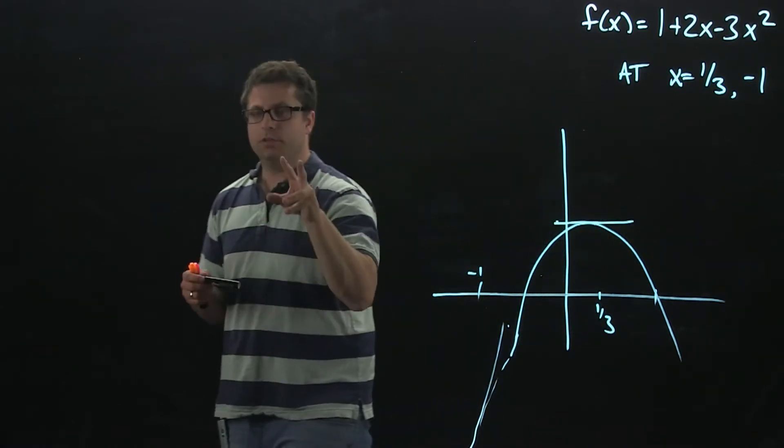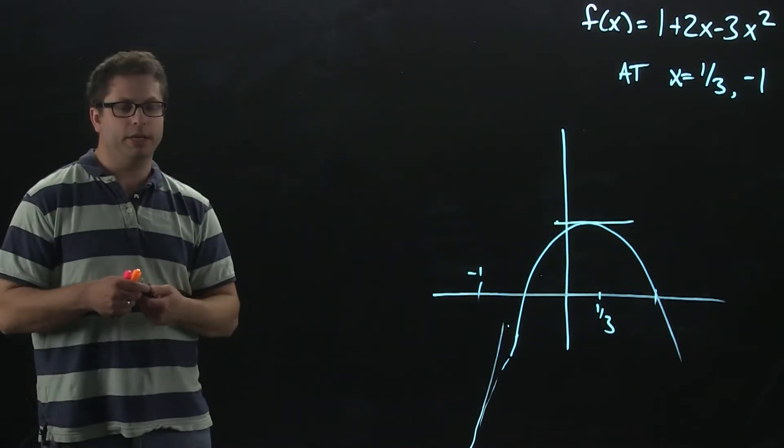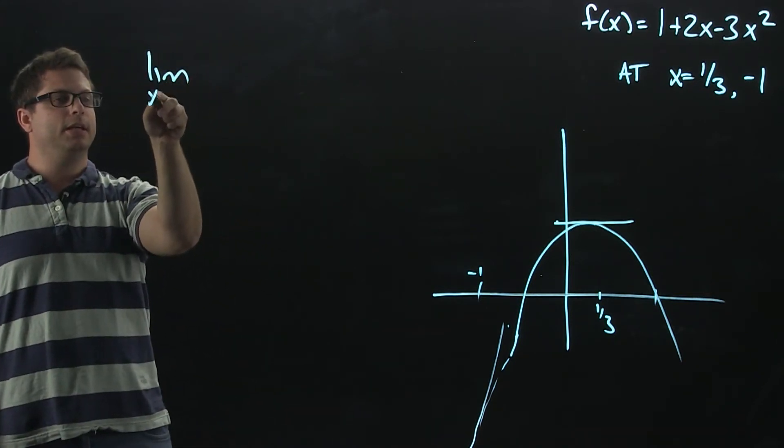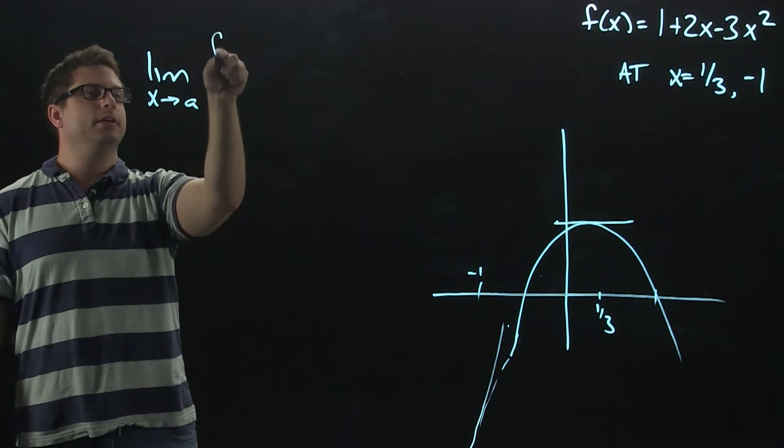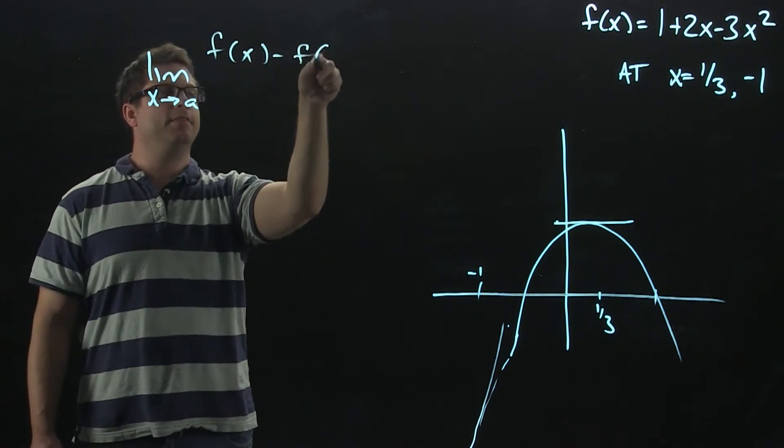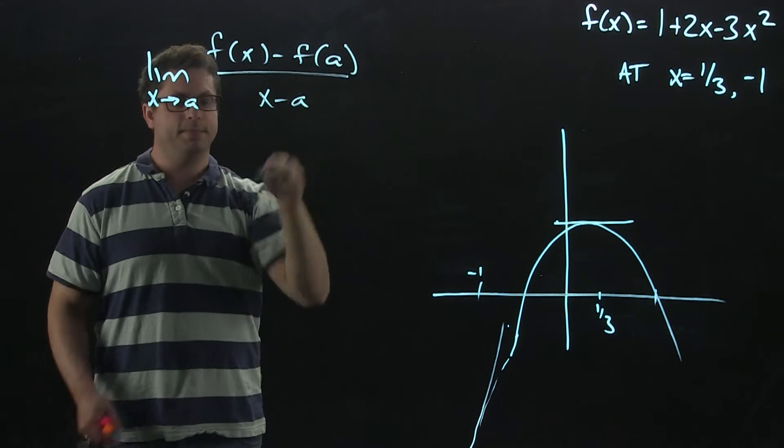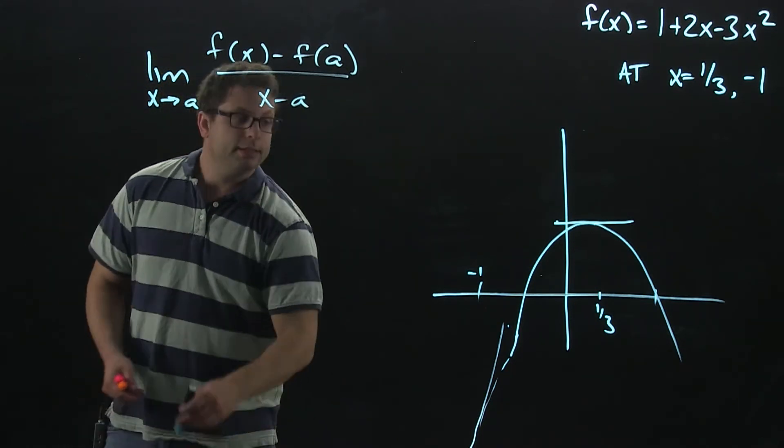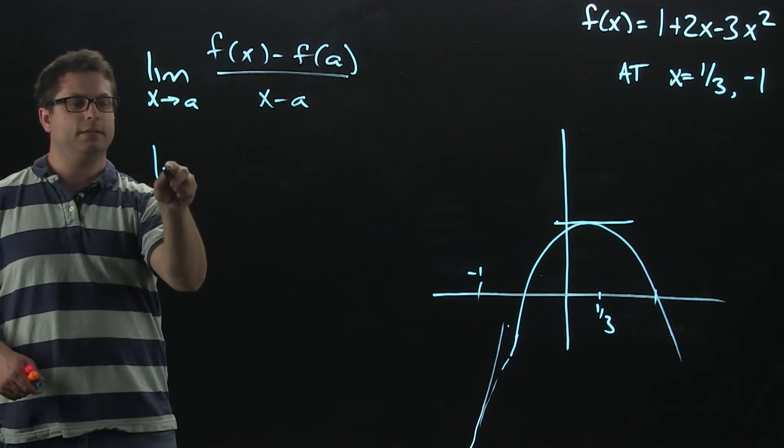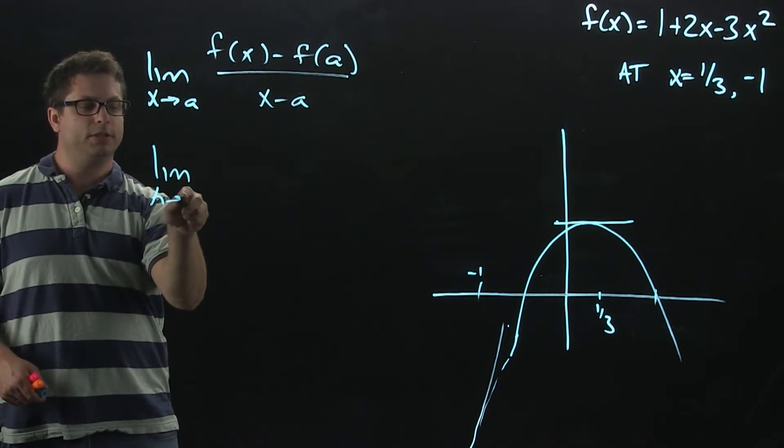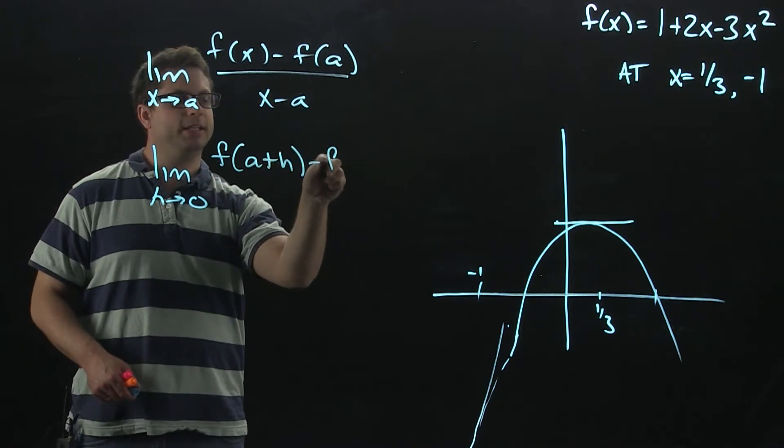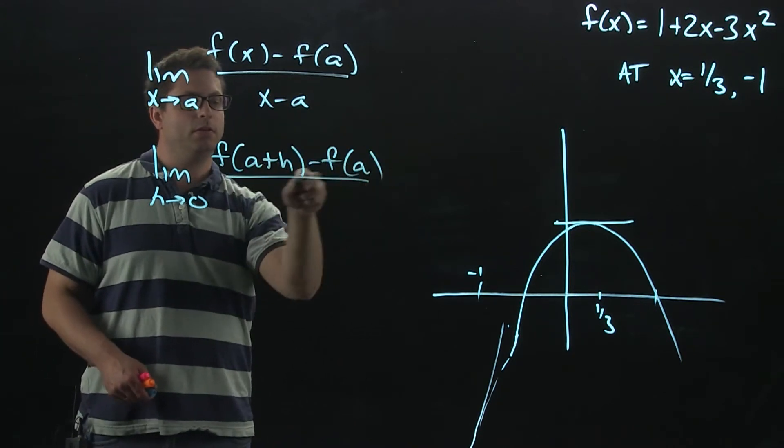There are two versions of these formulas that we can use. The first one is as x approaches a of f(x) minus f(a) all over x minus a. That's the first one. And then second is as h goes to 0 of f(a plus h) minus f(a) all over h.